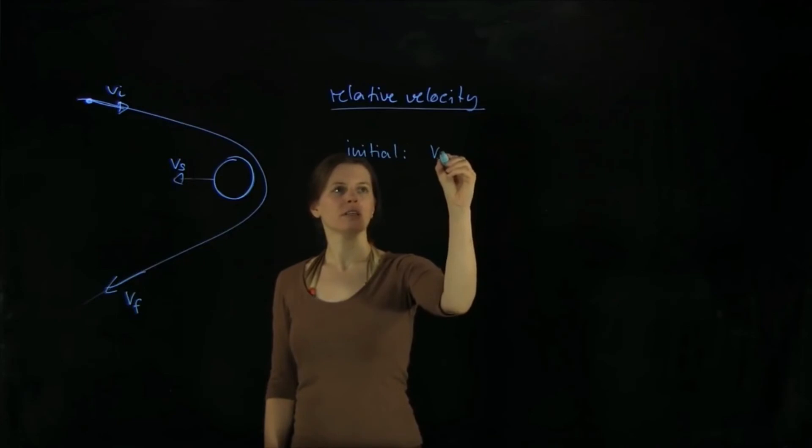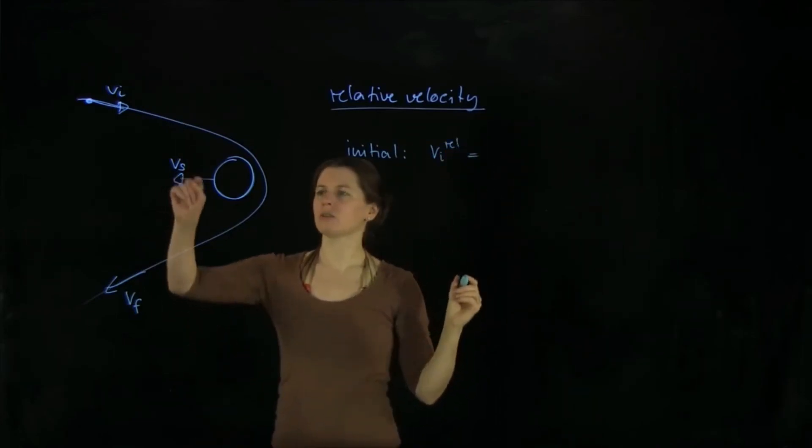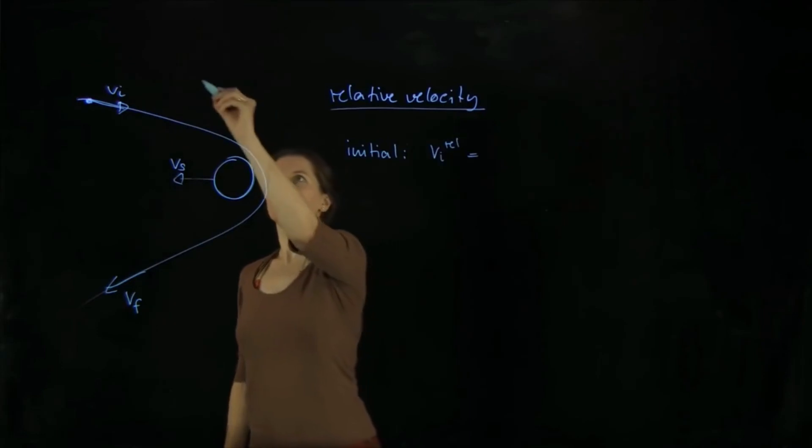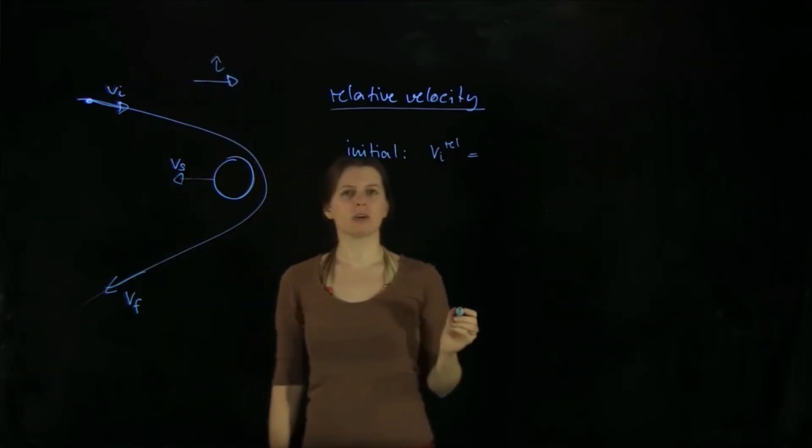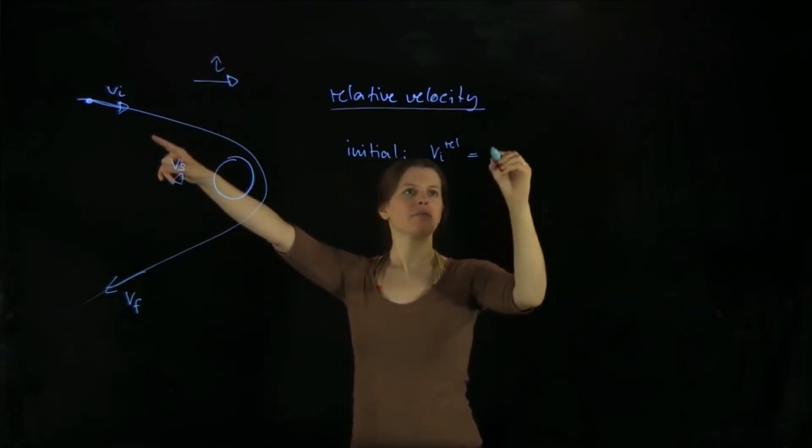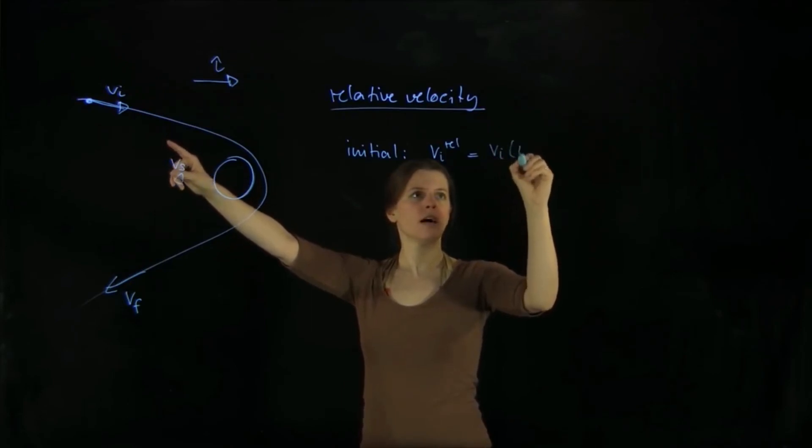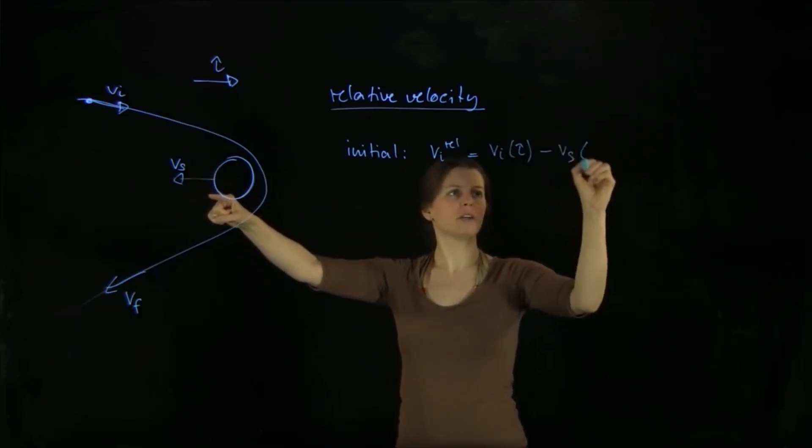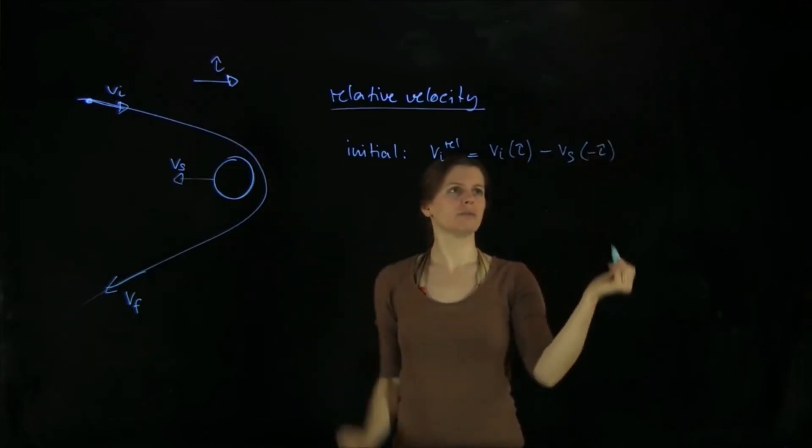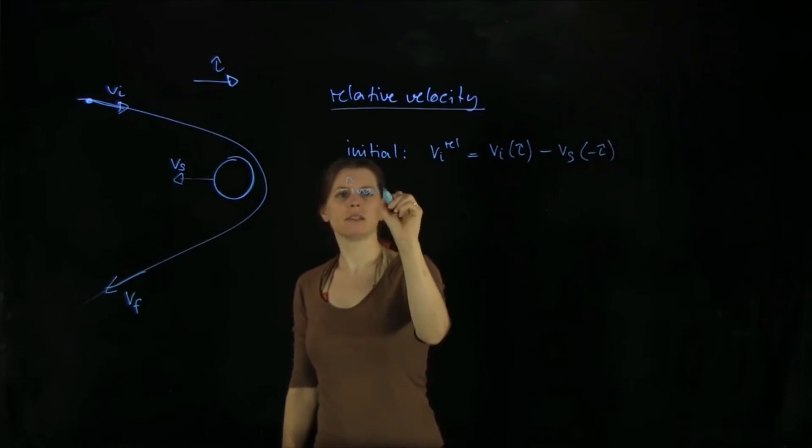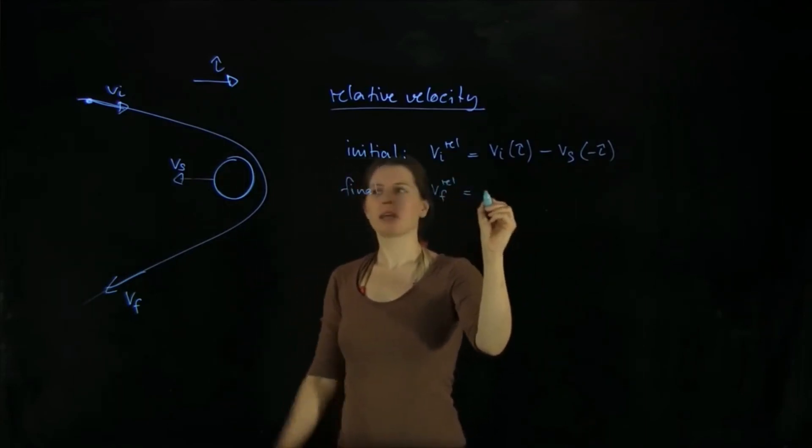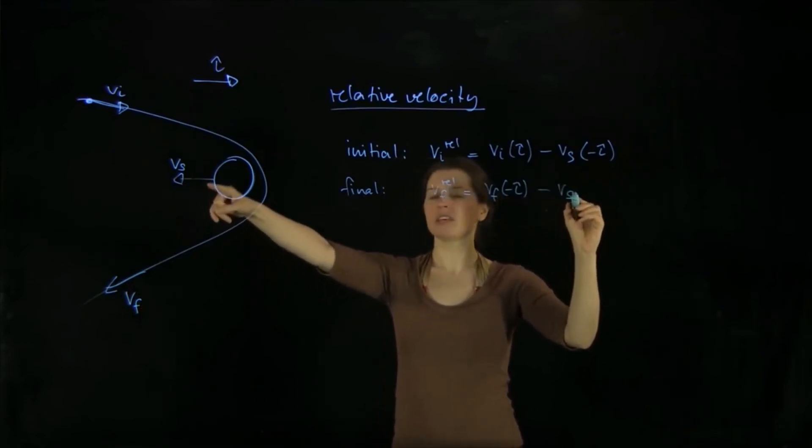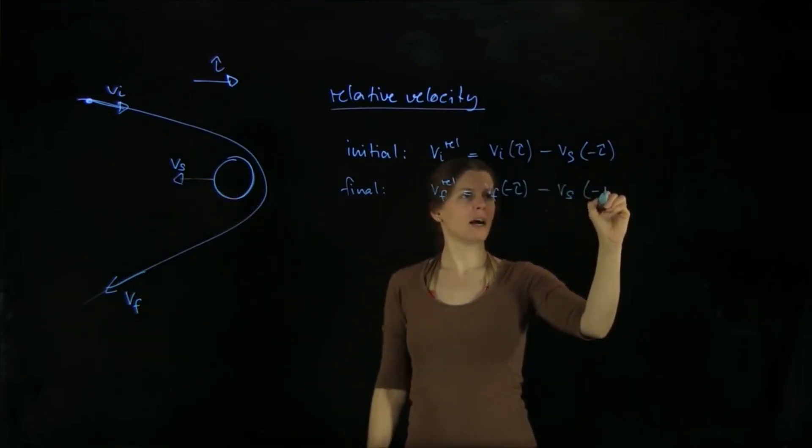So we have the relative velocity initially. And that is the difference between those two velocities, between the spacecraft and Saturn. And what becomes very important here is that we look at the coordinate system. And keep that in mind. Otherwise, we're going to get a few sign errors. So the initial velocity of the spacecraft goes in the i-hat direction. And the relative velocity is, of course, a difference. So minus the velocity of Saturn. But that one goes in the minus i-hat direction. And then we have the final state. So the final relative. And here we have the final velocity of the spacecraft, now going in the minus i-hat direction, minus the velocity of Saturn. That also goes in the minus i-hat direction.